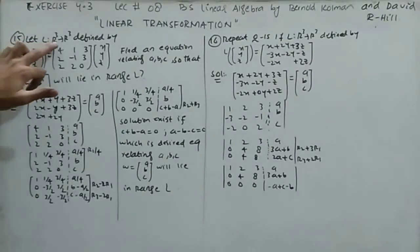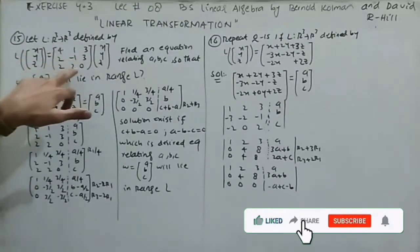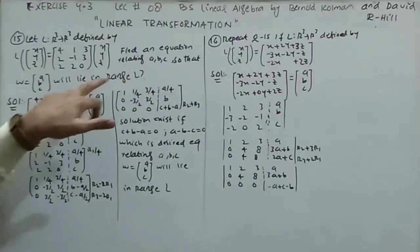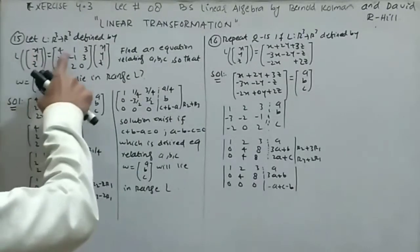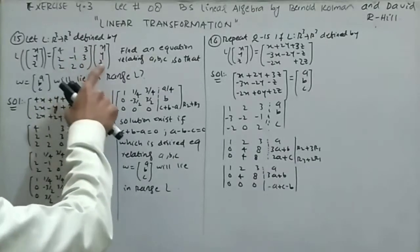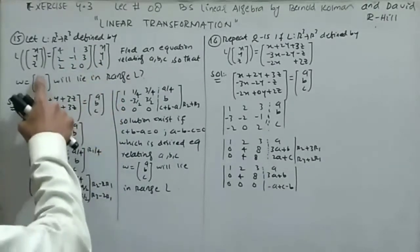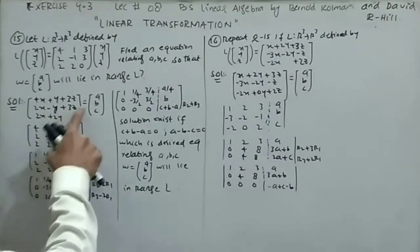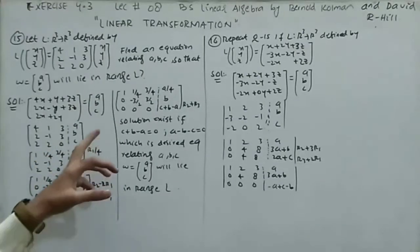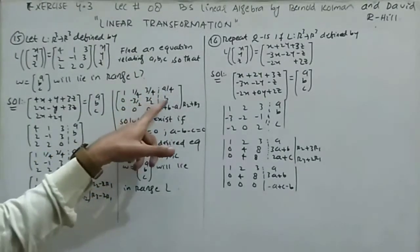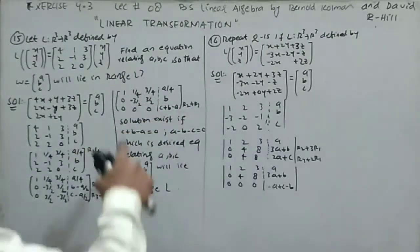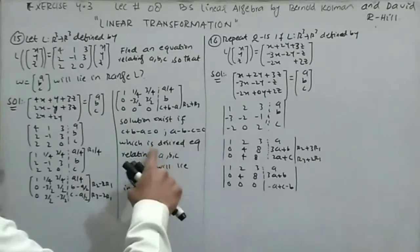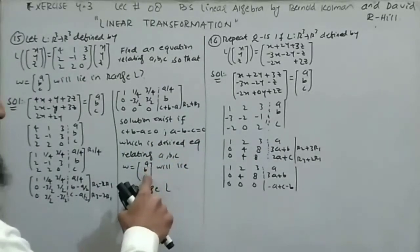Question 15: L from R³ to R³ defined by L(x,y,z) = [[4,1,3],[2,-1,3],[2,2,0]] · (x,y,z). Find the equation relating A, B, C so that W = (A, B, C) lies in the range of L. Setting L(u) = W and performing row reduction on the augmented matrix, the third row becomes entirely zero. The solution exists when C + B - A = 0, or equivalently A - B - C = 0, which is the desired equation.